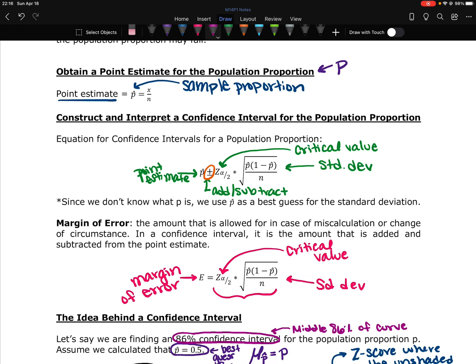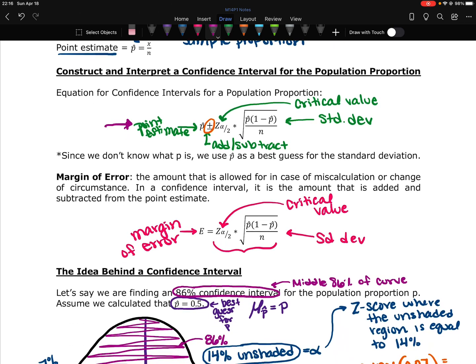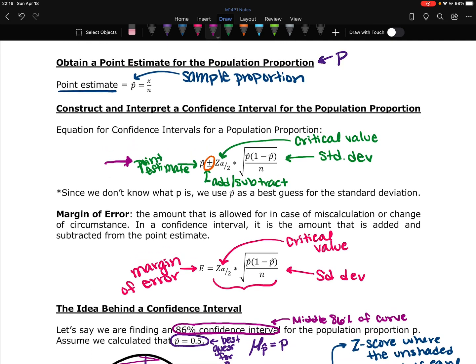So coming back, looking at this one again, because this is the big one. You have your point estimate, p hat. You add and subtract a z score based on alpha over 2, and that alpha is found by finding what percent of your curve is unshaded based on the given percent confidence interval times the standard deviation. And that is the introduction to confidence intervals.